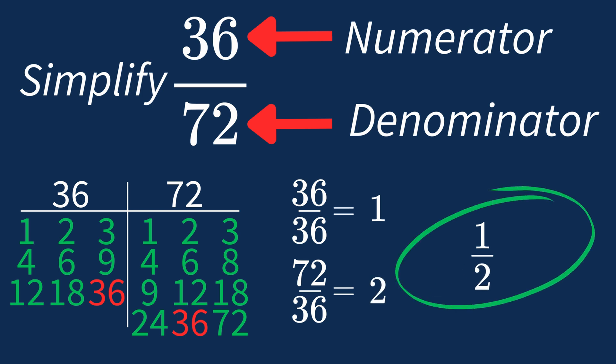And we know that 1 over 2 is in its simplest form, because the only common factor between 1 and 2 is 1. And when 1 is the largest common factor, we know that our fraction has been simplified.